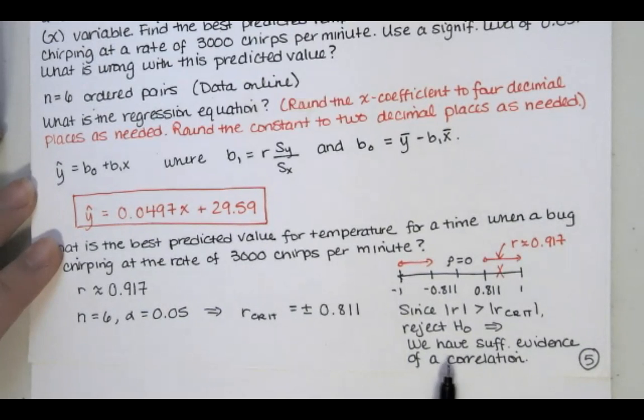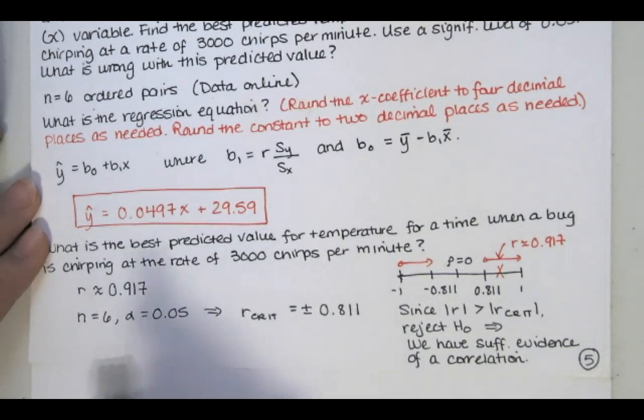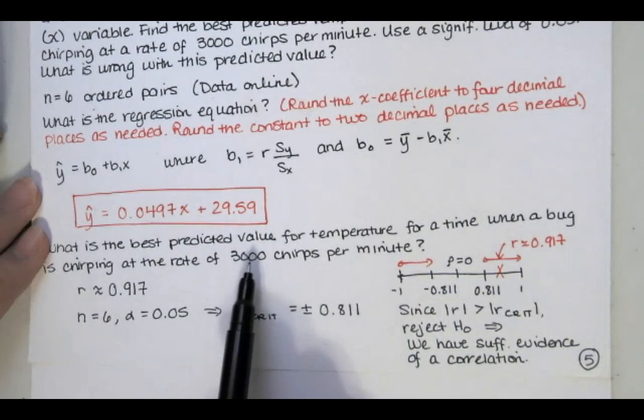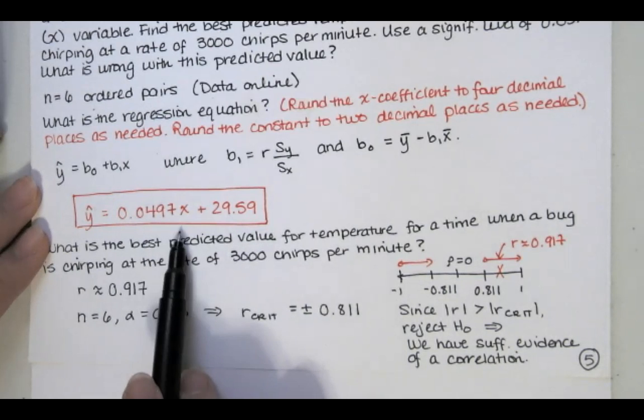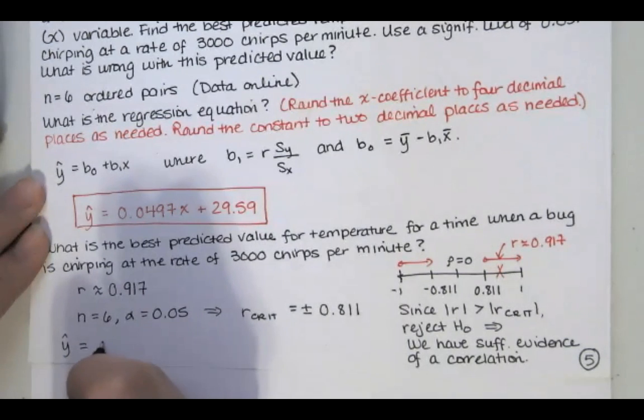Okay, if we have sufficient evidence of a correlation, that means it makes sense to use this to predict our y value. If x is 3000, we'll just substitute that in here and find the best predicted value of y.